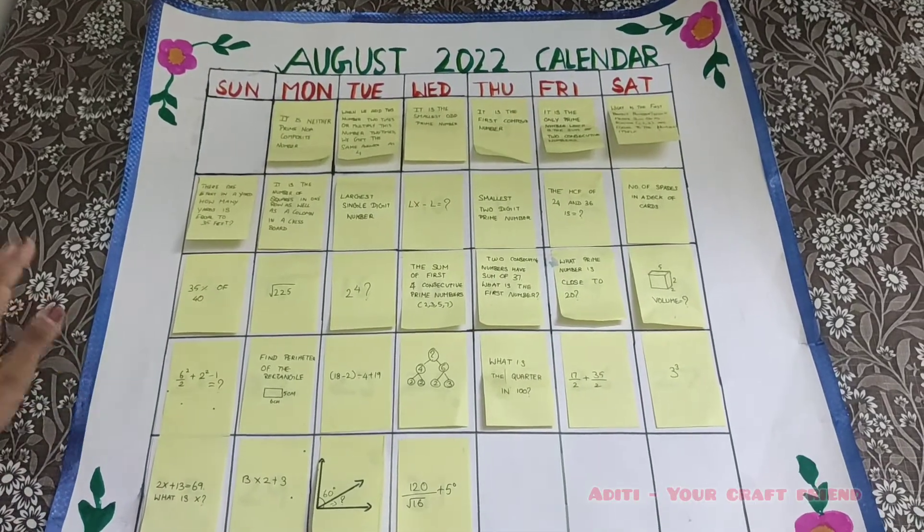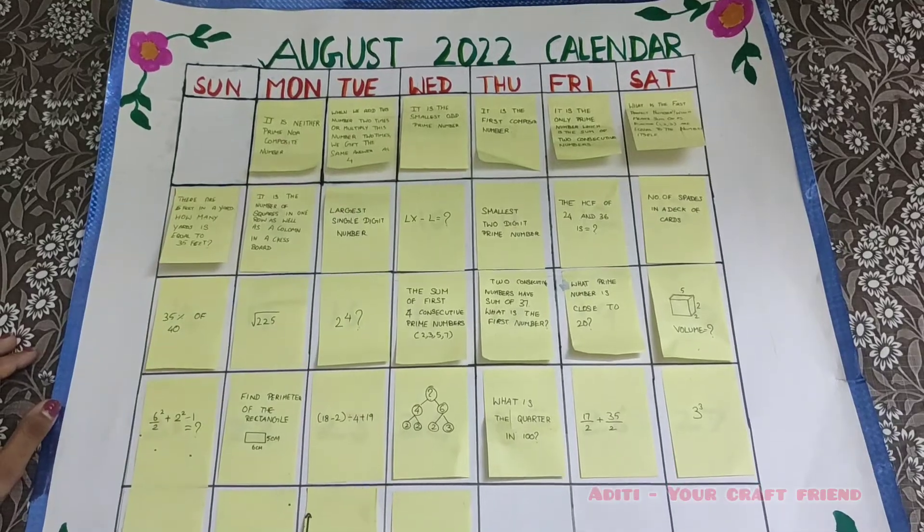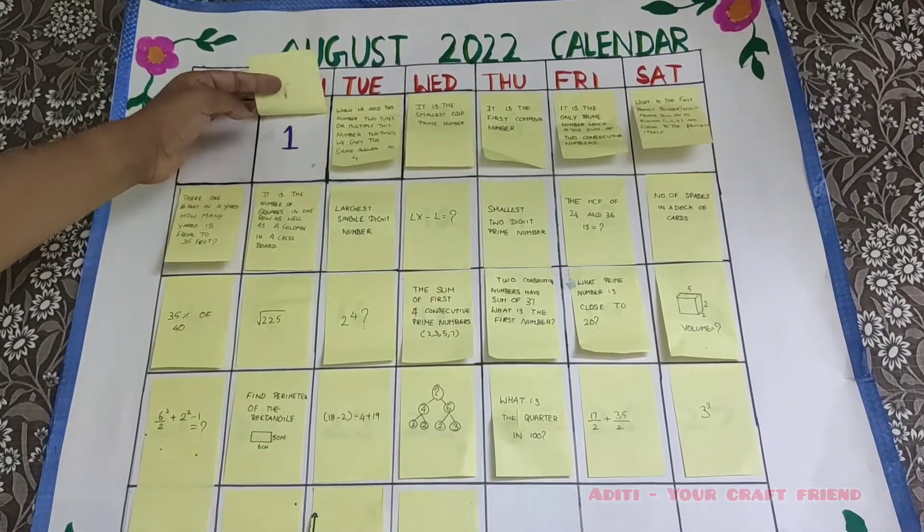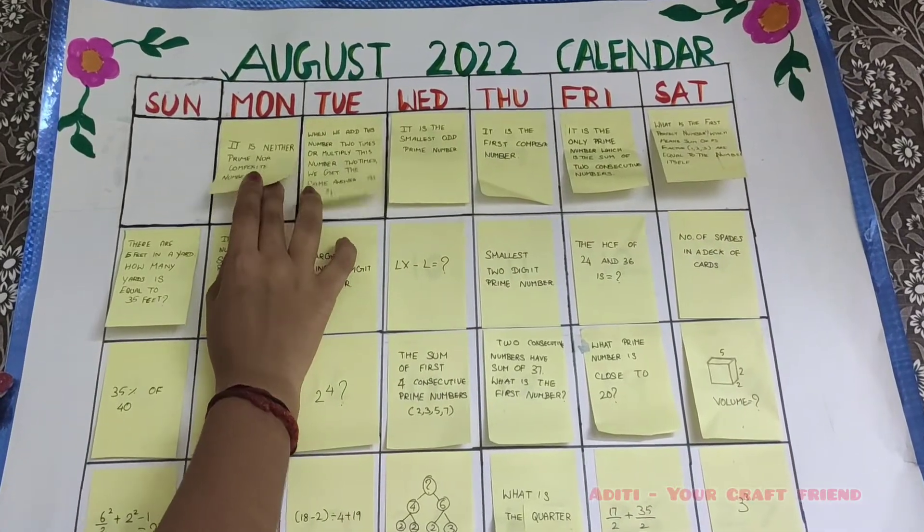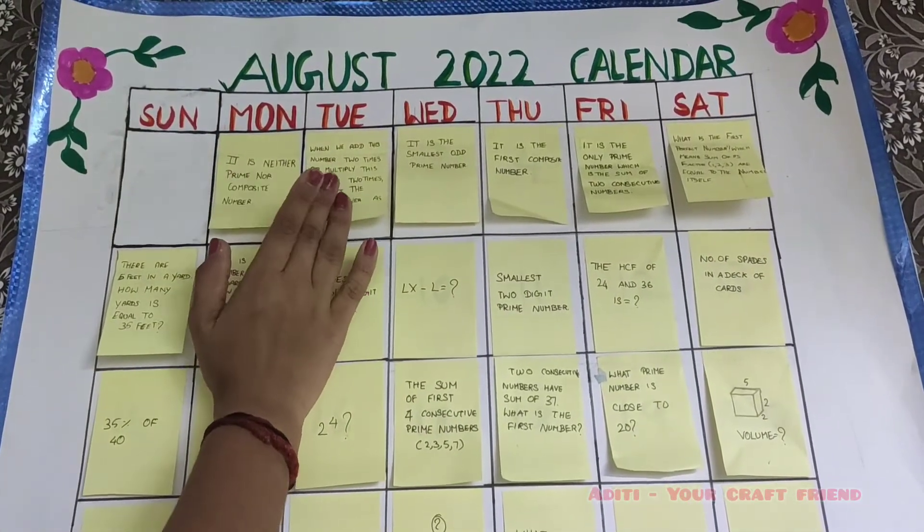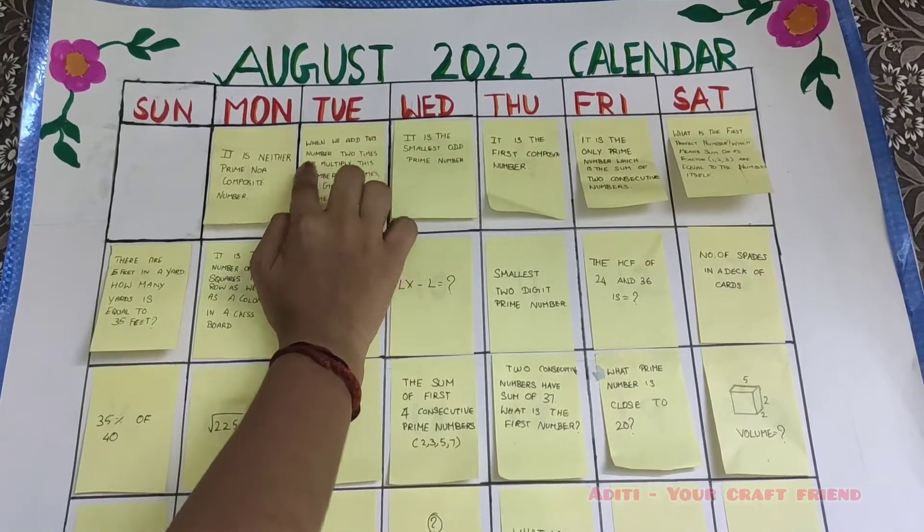Let's start from the first person. It is neither prime nor composite number. What is the number? Yes, it is 1. Next, so August starts on Monday. Next, when we add this number two times or multiply this number two times, we get the same answer as 4. What is the number? Yes, it's 2.